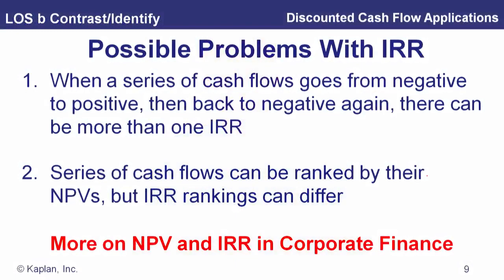There are some possible problems with the internal rate of return. For a simple project — a negative cash flow at the beginning followed by a series of positive cash flows — there is only one IRR. But if some future cash flows are negative, so the sign changes and then changes back again, there can be more than one IRR — more than one discount rate that makes the NPV equal to zero — and we wouldn't know which one to use. This is the problem of multiple IRRs.